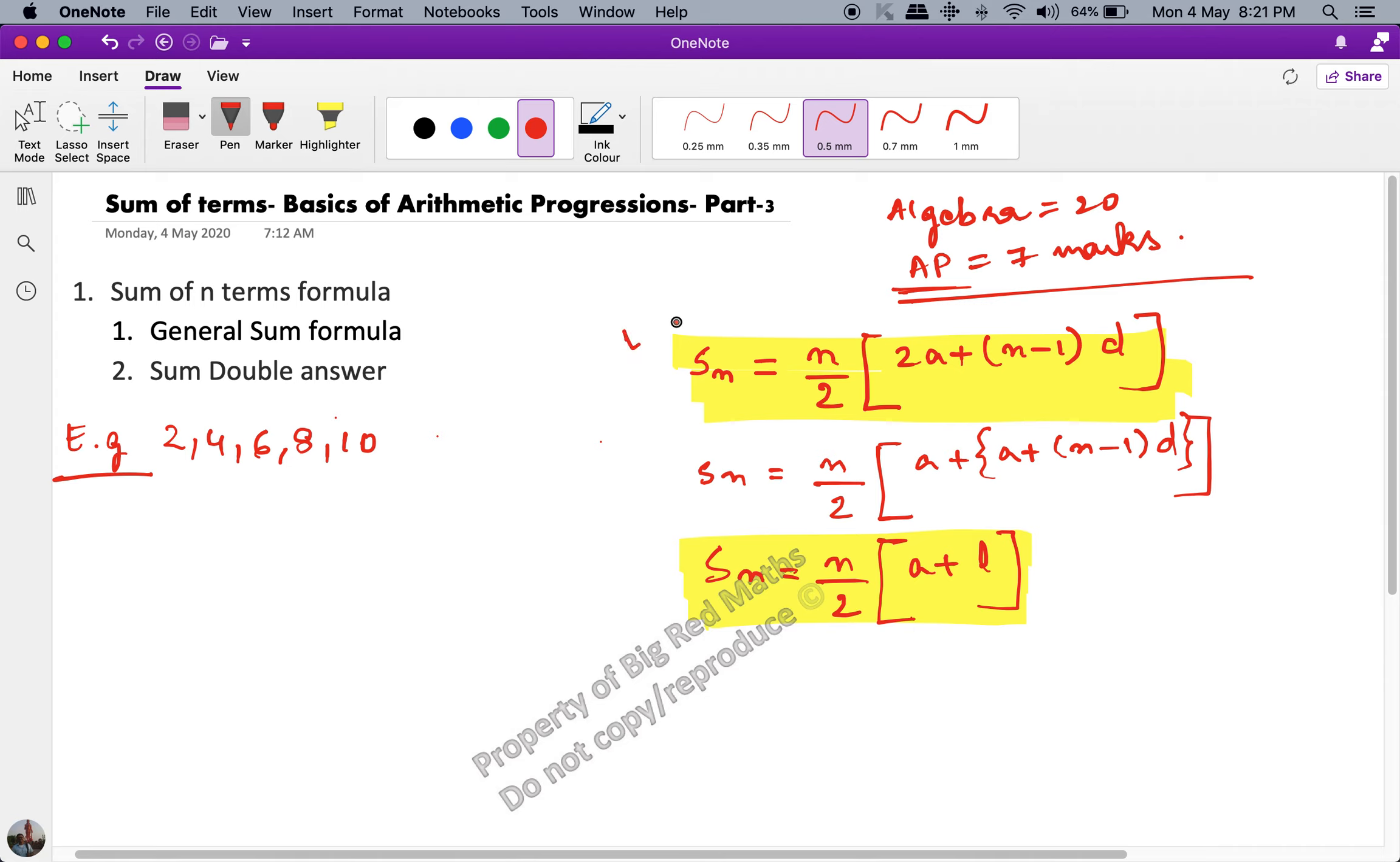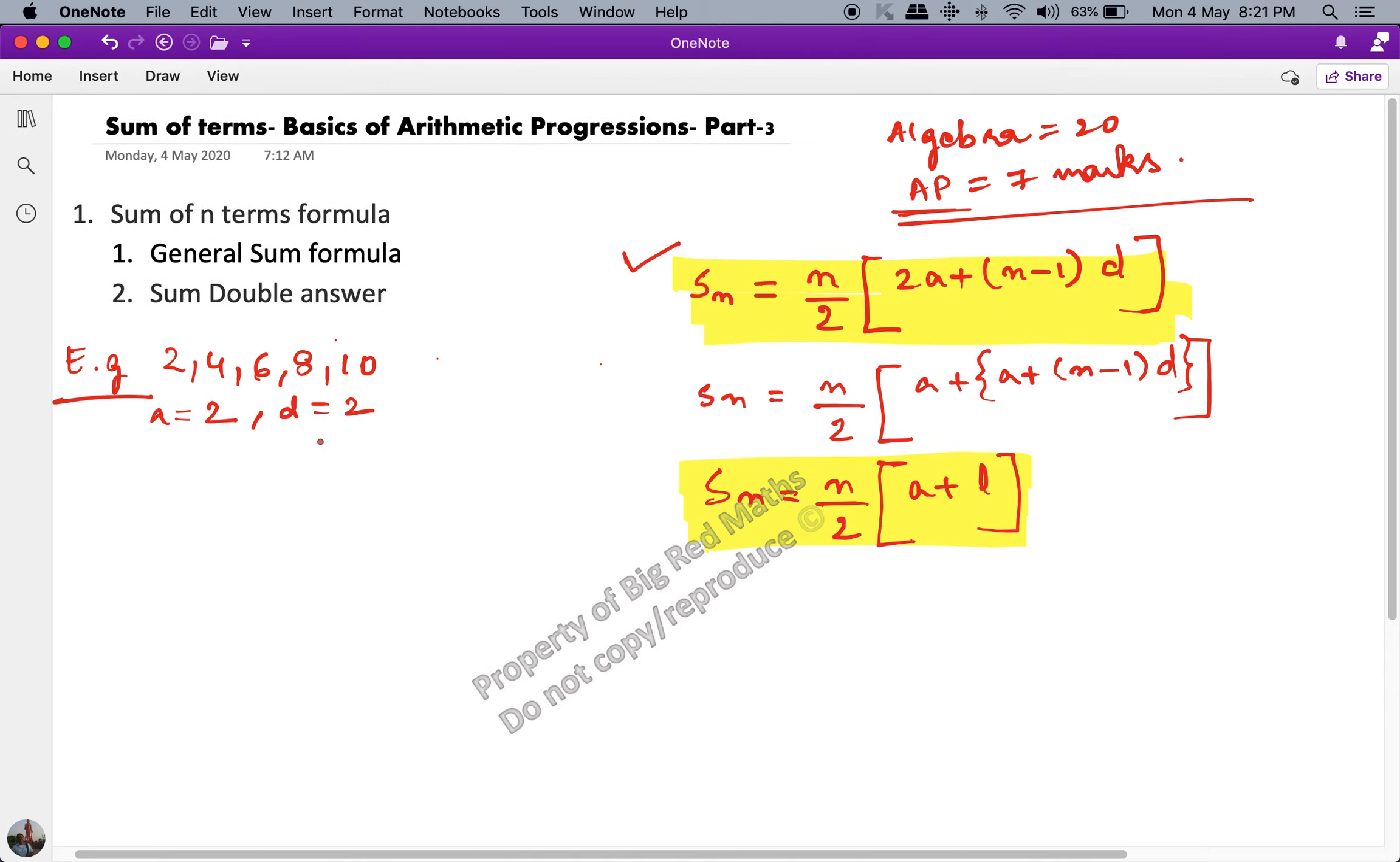Now let's put this formula into use. Say we have an AP which is 2, 4, 6, 8, and 10, where the value of a which is the first term is 2, the value of d is equal to plus 2 because every consecutive term is increasing by 2.